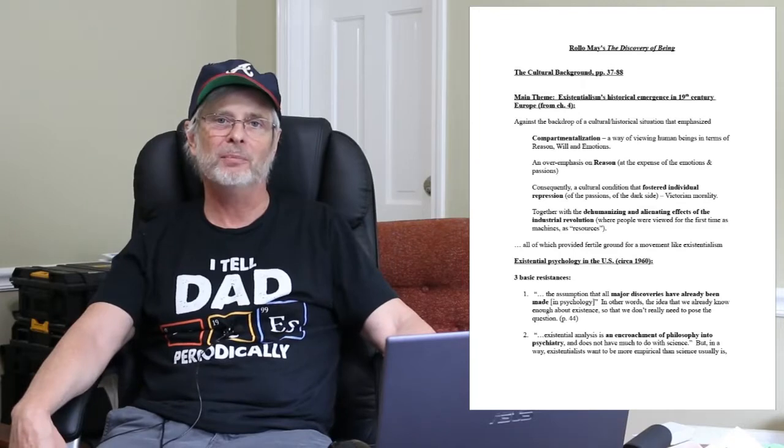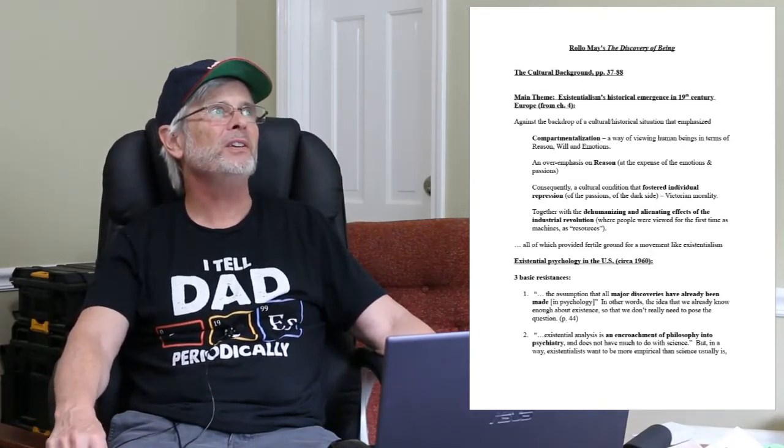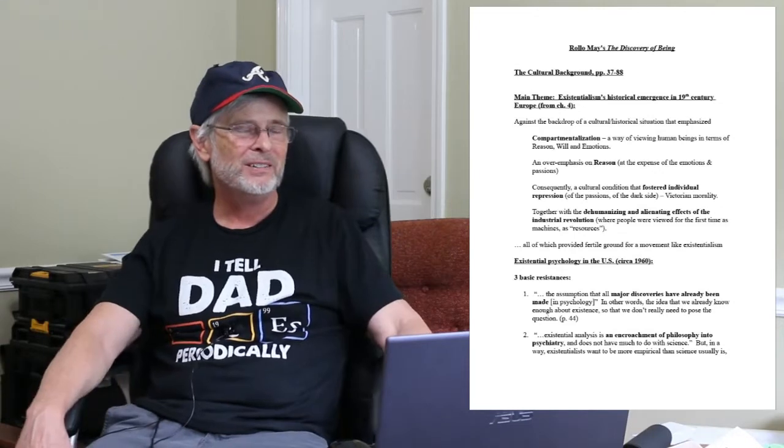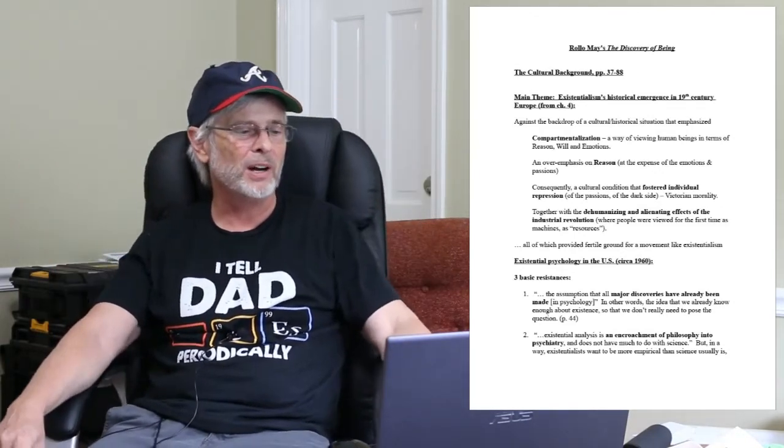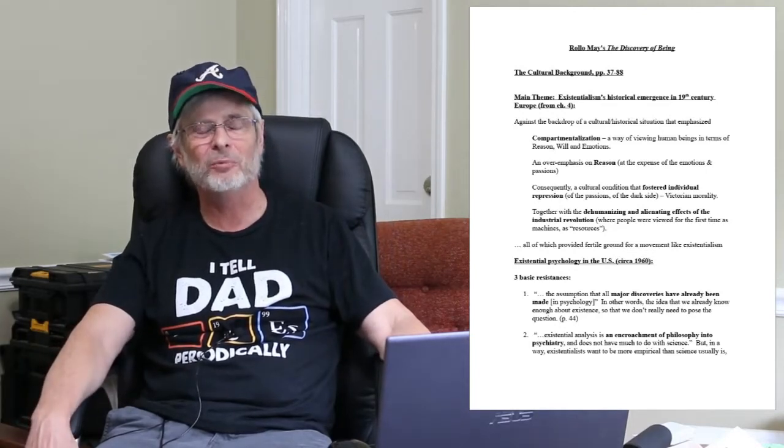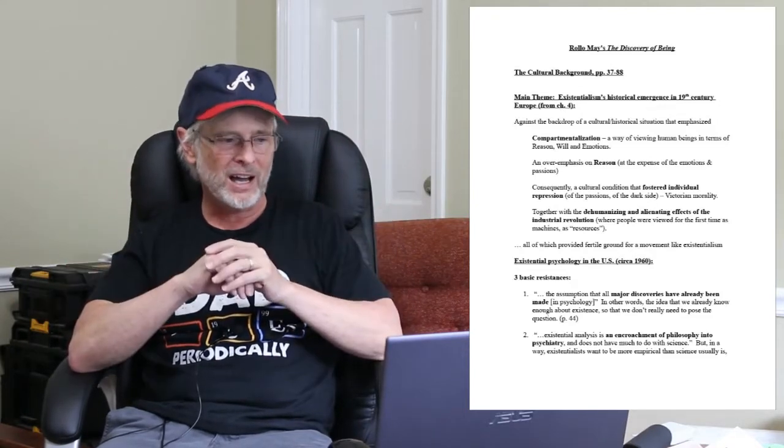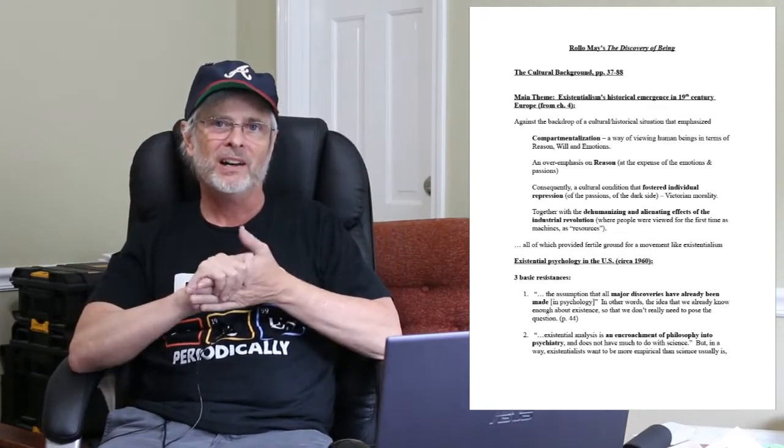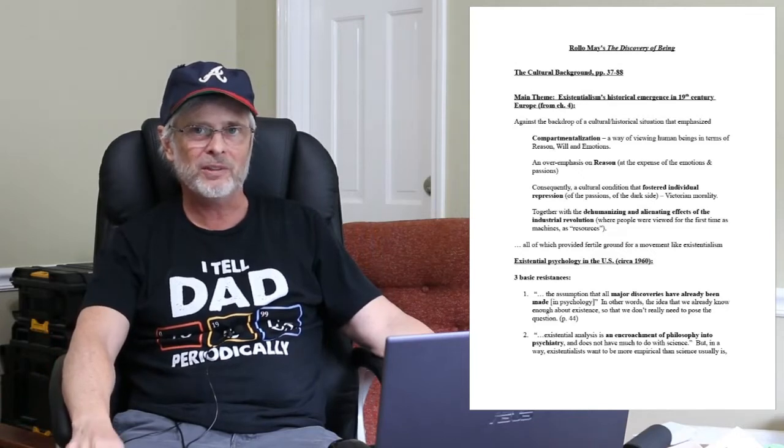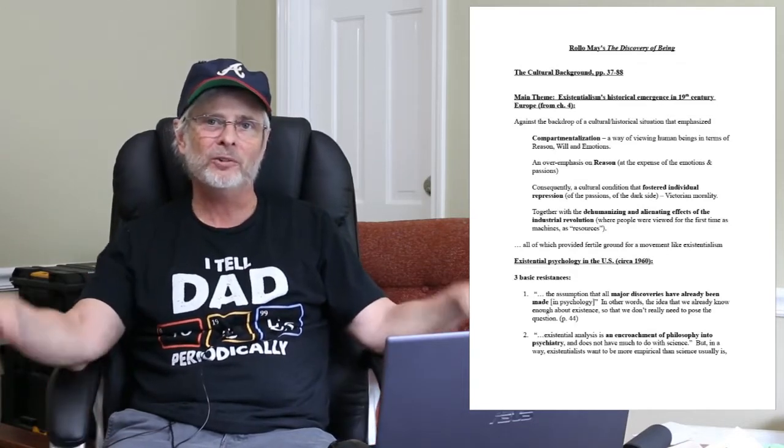So his way of talking about it is, in the 19th century, like think of the Victorian era. Queen Victoria's reign ended in 1901. So think of the Victorian era, which lasted quite a long time. It was one of the oldest reigns, I think, in the British Empire, maybe the second oldest. But at any rate, there was a lot of compartmentalization going on, is what Rollo May talks about. What is compartmentalization? Well, it's a way of separating and putting in neat little categories basic elements of our lives. Well, what are those basic elements? Well, he notes three. Reason, our capacity to think rationally. Will and willpower, the capacity to make decisions and choices, and then the emotions. So a way of thinking about what we are that sort of separates those things out.